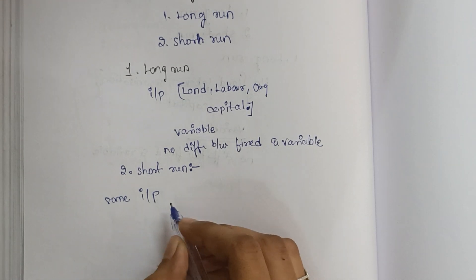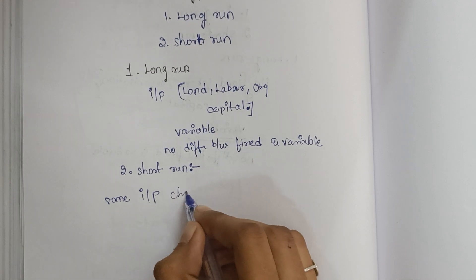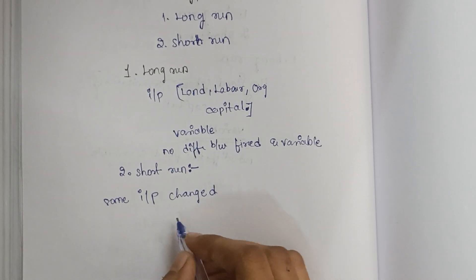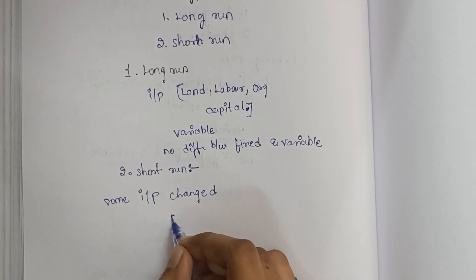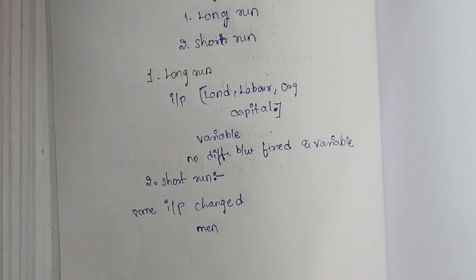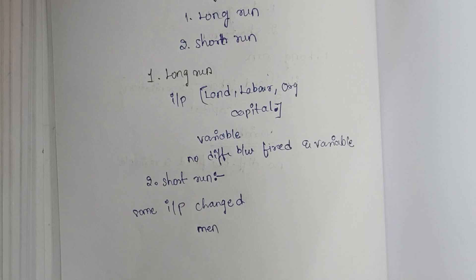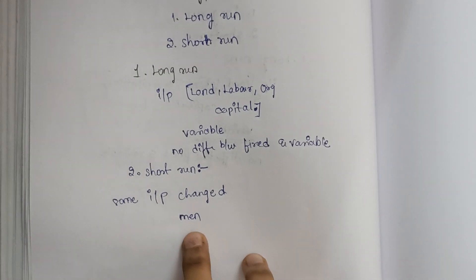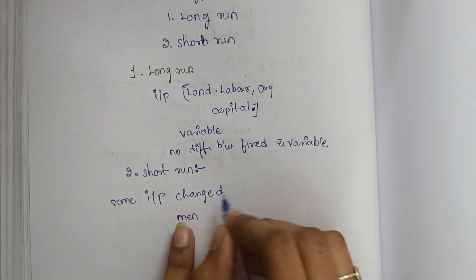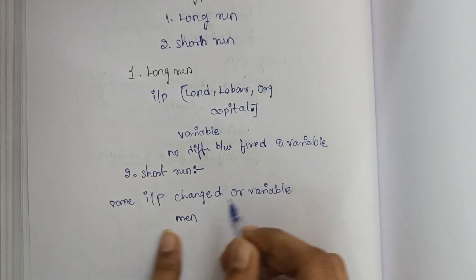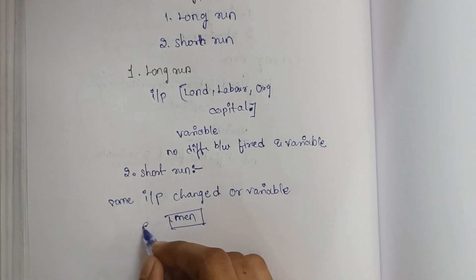In the short run, the changed input is men — that is, labor. When starting a company we need to produce more to get profit, so we need more men to work. To produce more we increase the number of men. So the input factor 'men' is variable — this is one example of a changed or variable input in the short run.